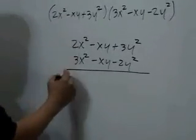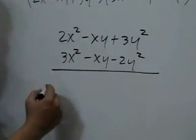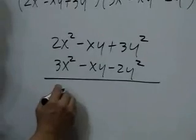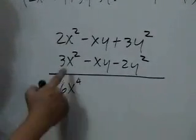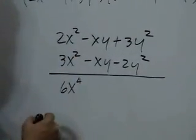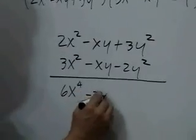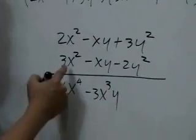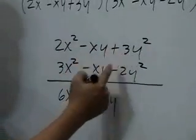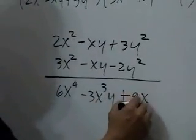So we have 3x² times 2x², that would be 6x to the fourth. 3x² times negative xy is negative 3x³y. 3x² times 3y² is 9x²y².